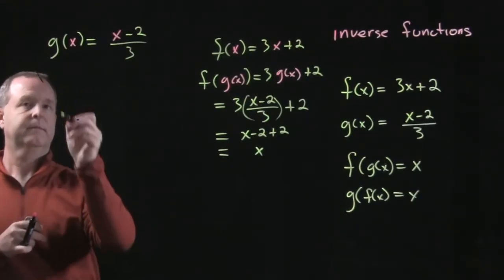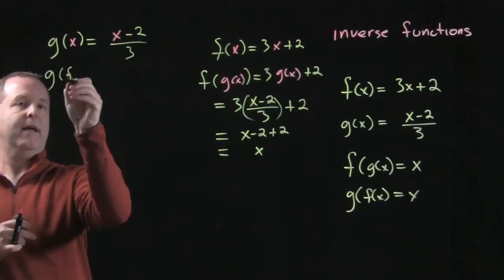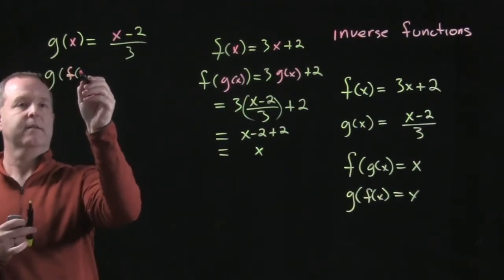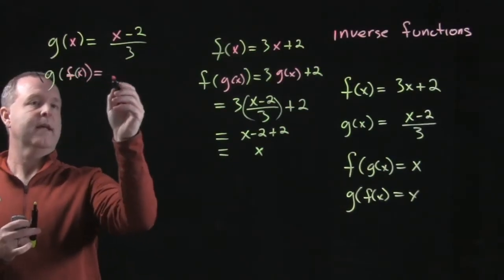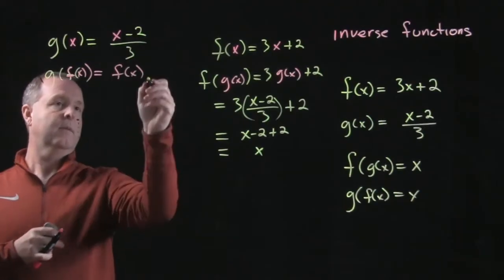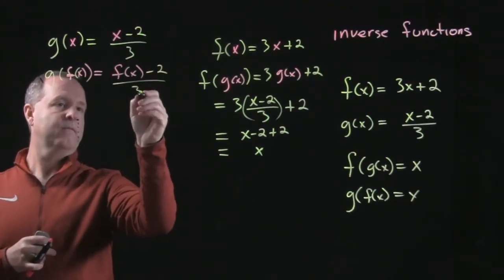g of x, g of f of x, should have been all f of x, equals f of x minus 2 over 3.